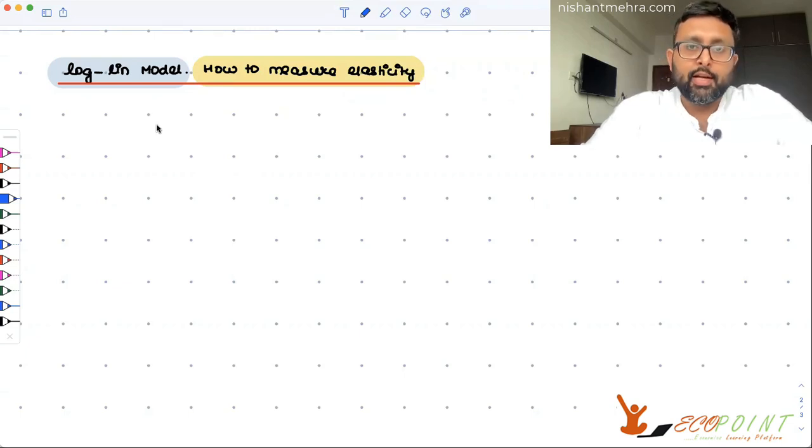Loglin model, how to measure elasticity. We are again starting our series of econometrics after several months. The last recording was on scaling and units of measurement. Now we are moving on to functional forms and how we will interpret these models.